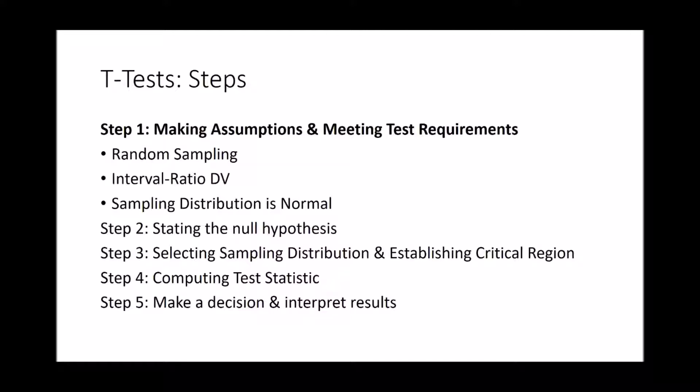There are several steps in conducting t-tests. Step one is making assumptions and meeting test requirements. Step two is stating the null hypothesis. Step three is selecting the sampling distribution and critical region. Step four is computing the test statistic. Step five is making a decision and interpreting results.